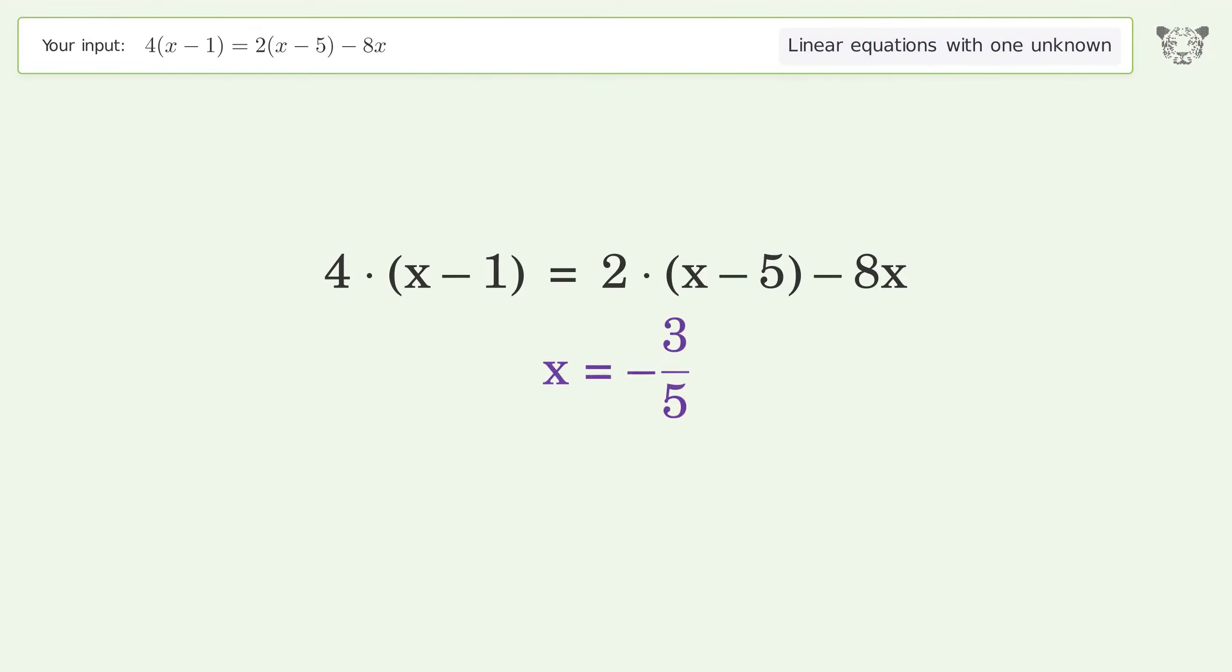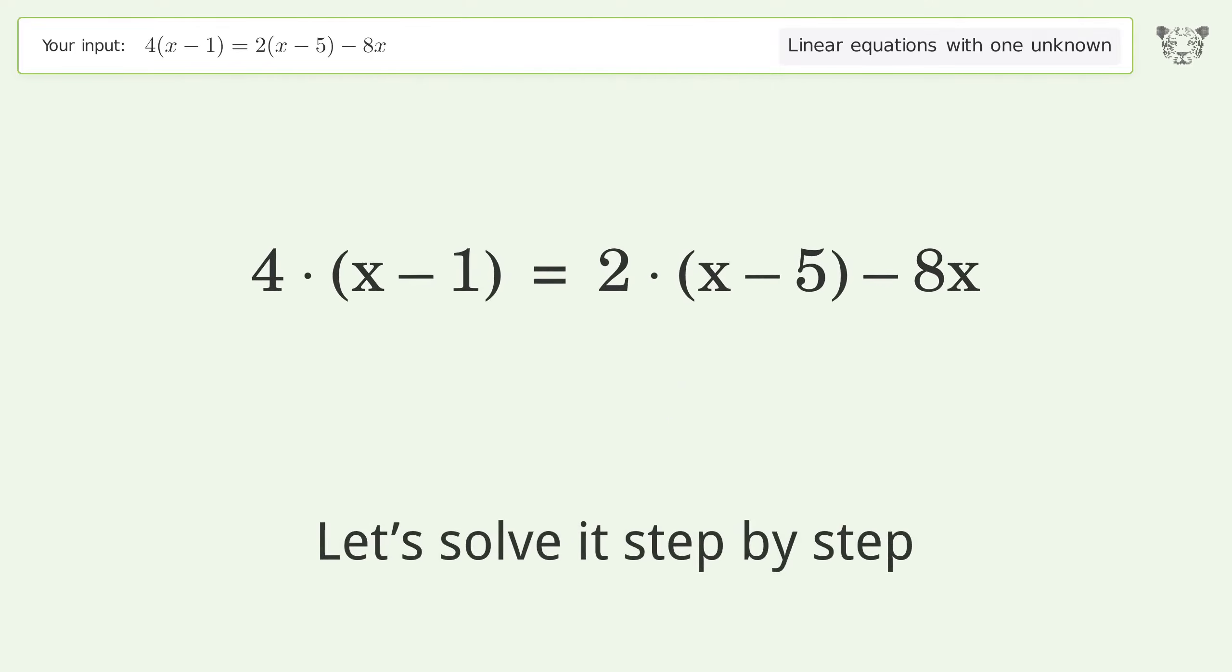You asked Tiger to solve this. This deals with linear equations with one unknown. The final result is x equals negative 3 over 5.